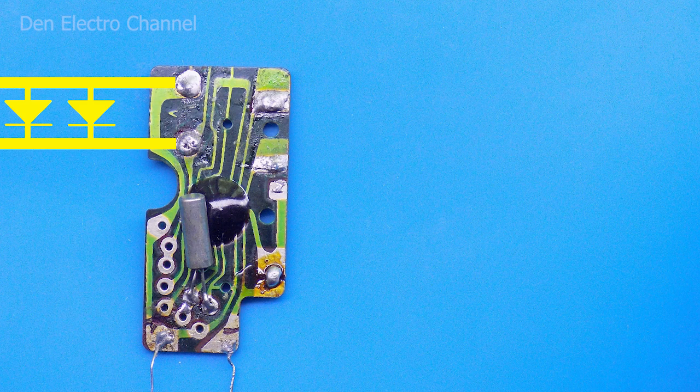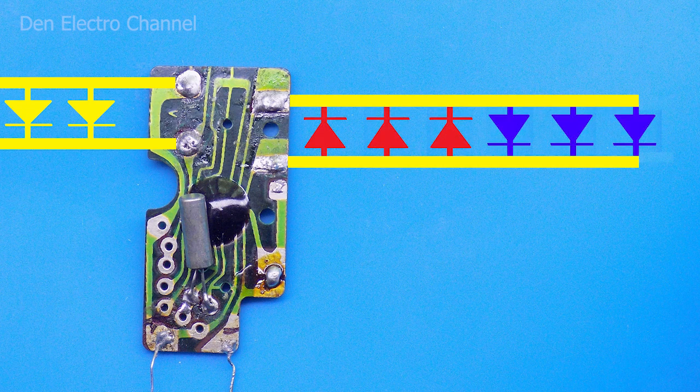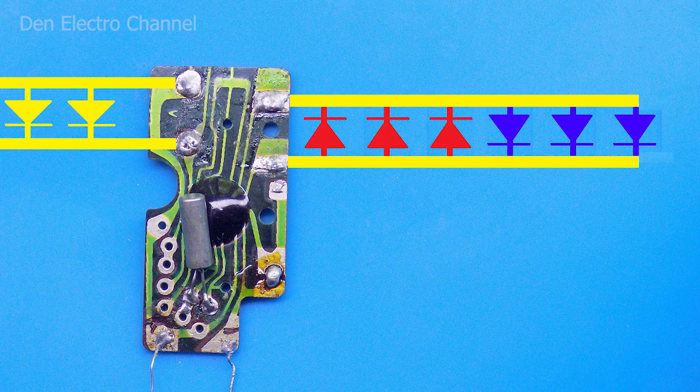A coil was connected to the contacts located on the right side of the board. We solder 6 LEDs to them. Diodes will be soldered in opposite parallel. 3 in one direction and 3 in the other direction.